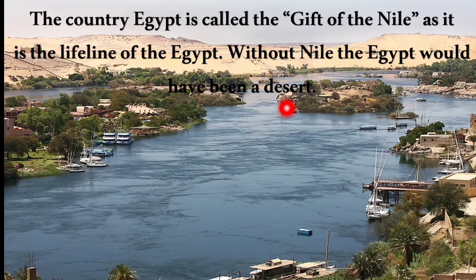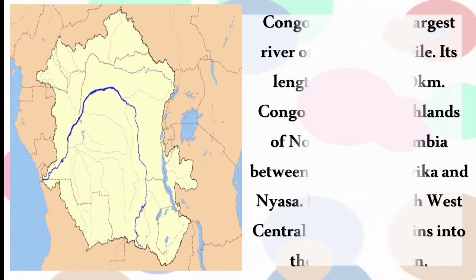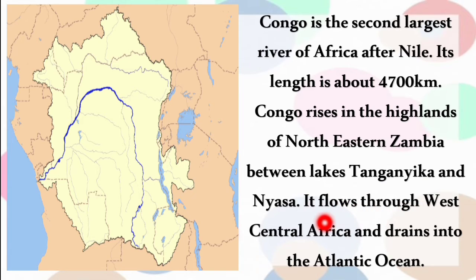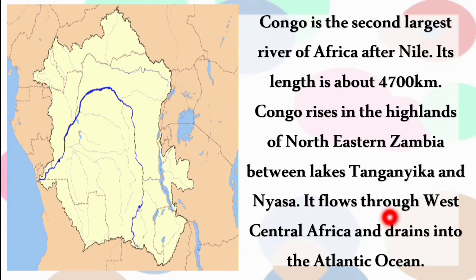Egypt is called the 'gift of Nile' as it is the lifeline of the country - without Nile, Egypt would have been a desert. River Congo is the second largest river of Africa after the Nile, with a length of about 4,700 km. It rises in the highlands of northeastern Zambia between Lakes Tanganyika and Mweru, flows through West Central Africa and drains into the Atlantic Ocean.